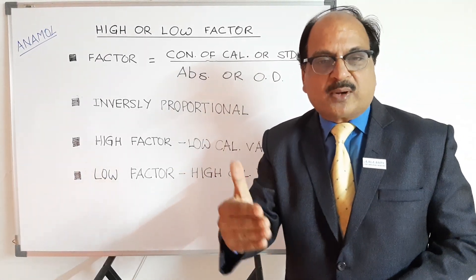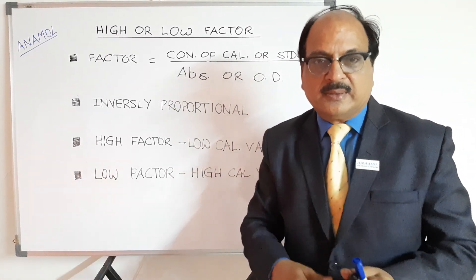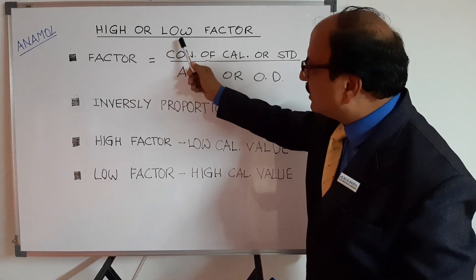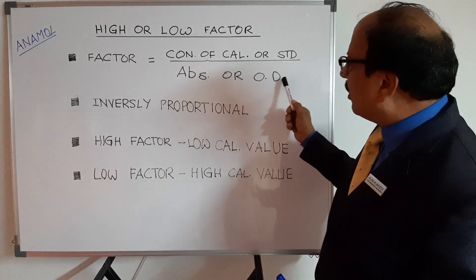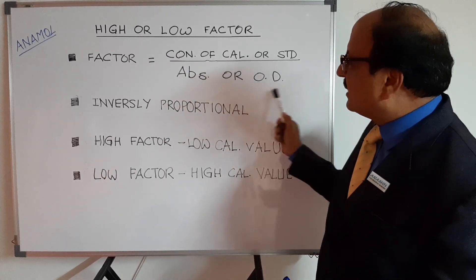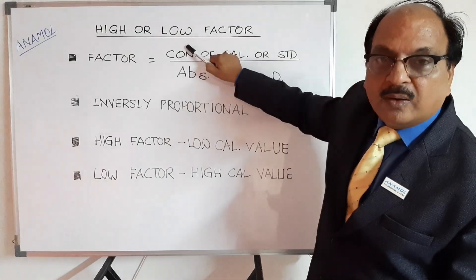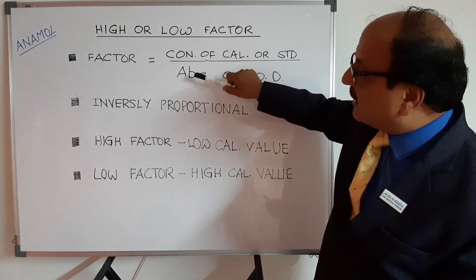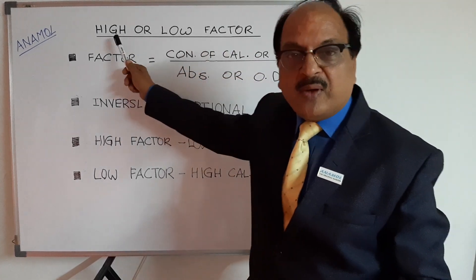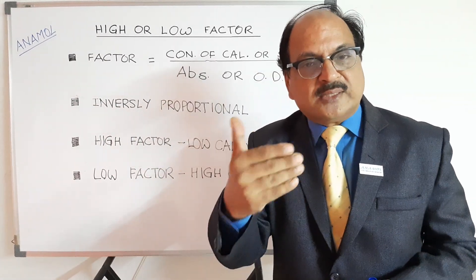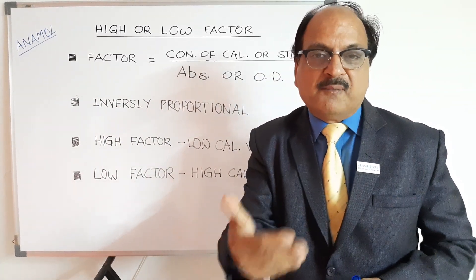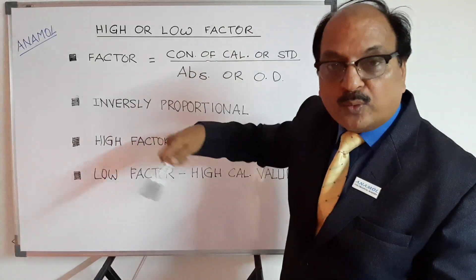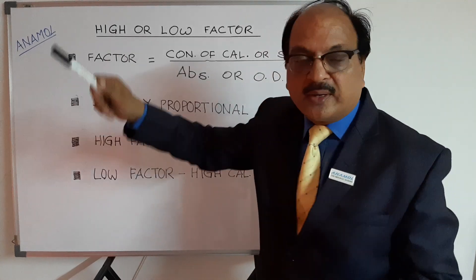Irrespective of whether it is a standard or whether it is a calibrator, this is what is used for calibrating the analyzer. This factor is nothing but, when you run the test, the concentration divided by the absorbance — or optical density — observed by the analyzer for this calibrator or synthetic standard. Concentration divided by the absorbance is what is called the factor. This factor is fed into the instrument to memorize. Whenever you do the next day's test, the absorbance of the sample will be multiplied by this factor to get your results.